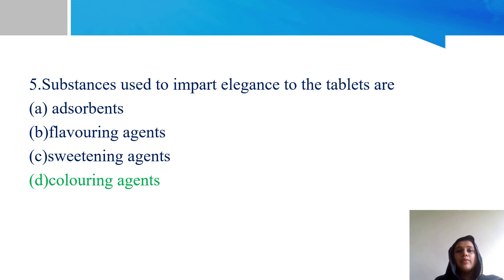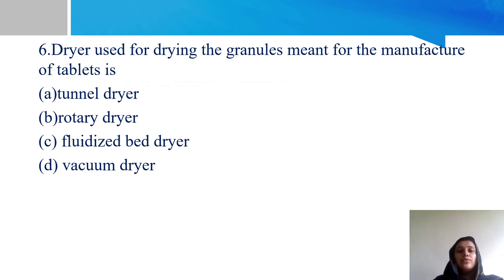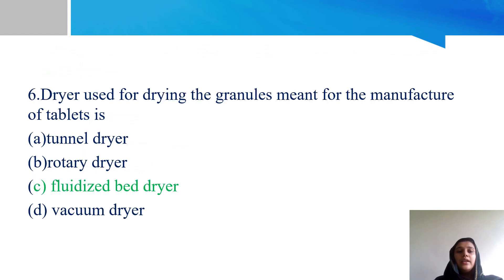FDA-approved coloring agents are normally used in tablets. Sixth question: dryer used for drying granules in the manufacture of tablets. Options: A - tunnel dryer, B - rotary dryer, C - fluidized bed dryer, and D - vacuum dryer. Option C - fluidized bed dryer - is the right answer for drying granules.